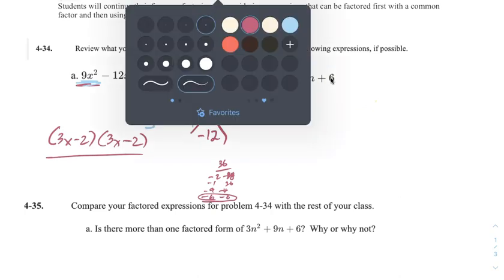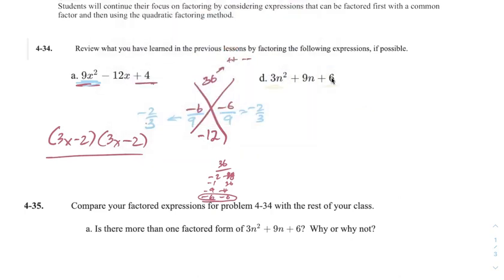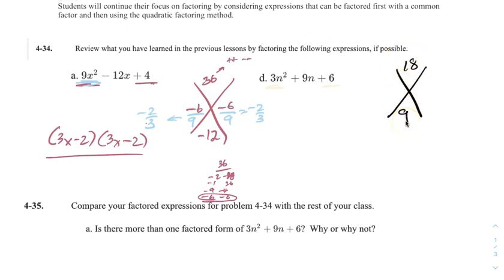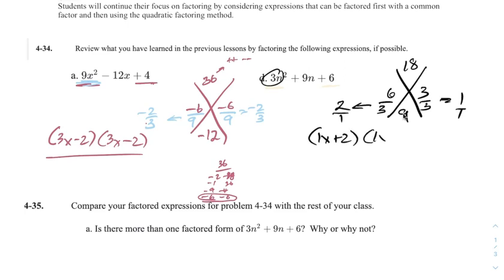Now this one — same concept. Let's multiply A and C together first. I get 18. On the bottom we're going to write 9. Now I need two things that multiply to get 18 but add to get 9. That's 6 and 3 — 3 times 6 is 18, and 3 plus 6 is 9. So we're going to put this over the A, which is 3. Reduce if you can: this gets me 2, this gets me 1. So it's going to be 1x plus 2 and 1x plus 1.